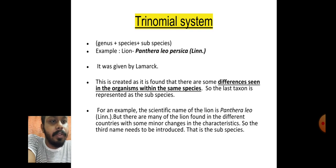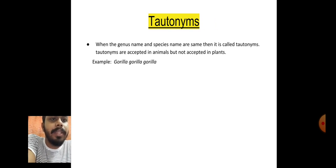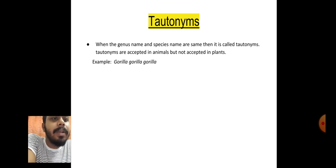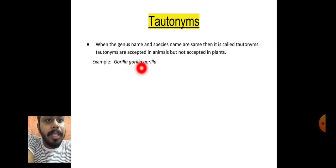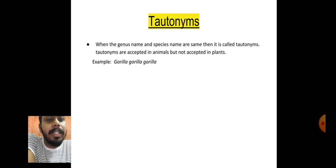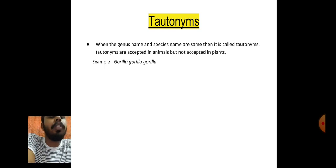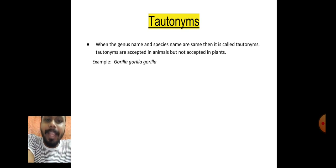The last topic is tautonyms. When the genus name and species name are the same, it is called a tautonym. Tautonyms are accepted in animals but not in plants. For example, gorilla gorilla gorilla — the first is the genus name, the second is the species name, and the third is the subspecies name. These are all about the binomial nomenclature system. Thank you for watching.